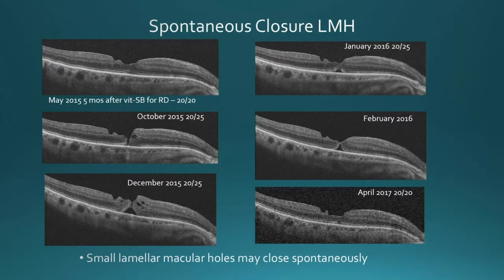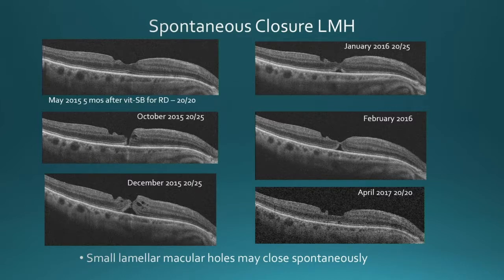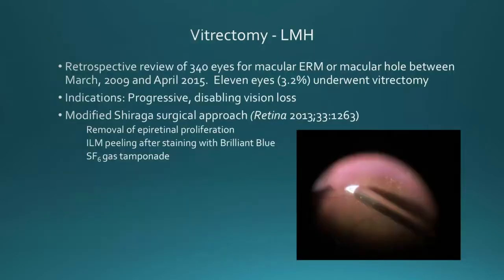Small lamellar macular holes may spontaneously close, and there are many reports of small lamellar holes closing spontaneously. This is a patient of mine who had a retinal detachment treated with scleral buckling and vitrectomy. Shortly after the procedure, the macula was normal, but five months later you begin to see the development of a lamellar macular hole. Almost a year later, a small macular hole formed with good visual acuity. We followed this, and the hole eventually closed spontaneously with a small defect in the ellipsoid zone.